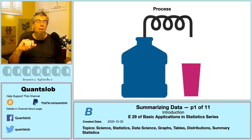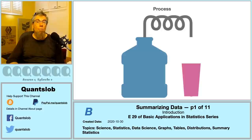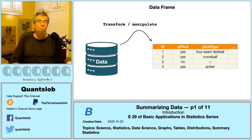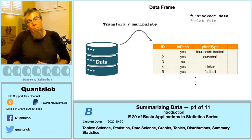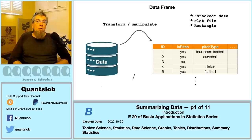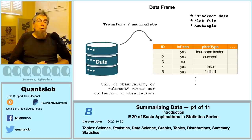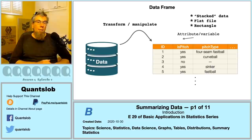It often happens that the first part of our process involves taking raw data and manipulating or transforming it into a common data structure — namely a data frame. This is certainly the case with our major league baseball data, as the raw data are made up of many thousands of individual isolated files. Our data frame can also be called stacked data, or broadly a flat file or data rectangle. Each row represents our unit of observation, and each column refers to an attribute or variable.